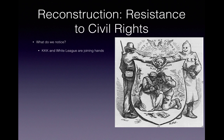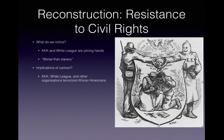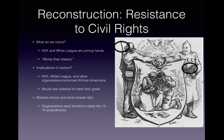Continuing with Reconstruction, this political cartoon deals with resistance to civil rights. The KKK and the White League join hands; underneath is a skull and crossbones reading 'Worse than Slavery.' The KKK member carries a gun and knife; the White League member has a bayoneted rifle. These organizations terrorized African Americans using violence. Organizations were formed to resist the 13th through 15th Amendments, and southern resistance to Radical Republicans and Reconstruction was strong.